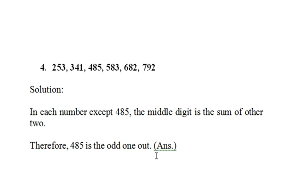Now question four: 253, 341, 485, 583, 682, and 792. We can clearly see that these are all three-digit numbers. So there is something to do with the digits in these numbers.